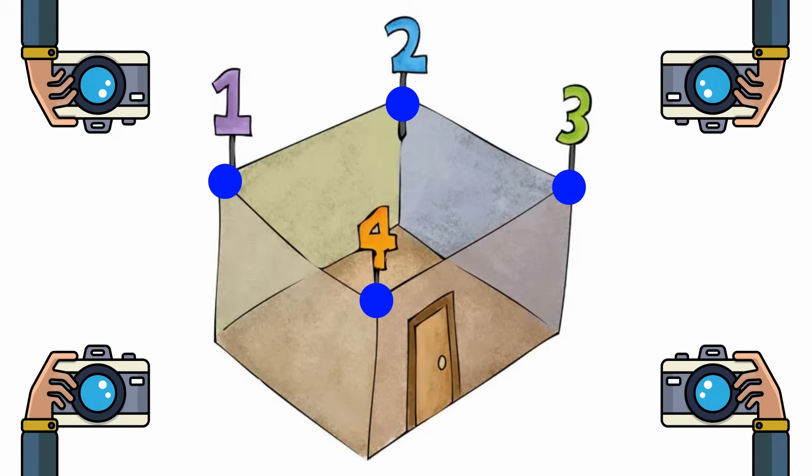If appropriate equipment is available, photographs can also be taken from the height of the ceiling. This provides a fresh perspective to the CS, as many details can go unnoticed if viewed from the ground.